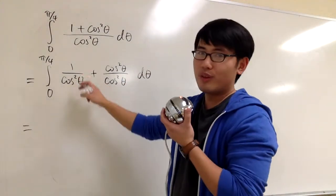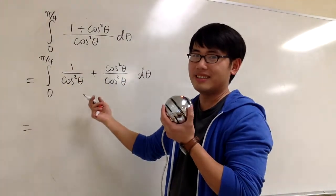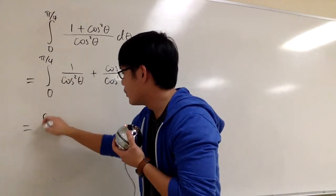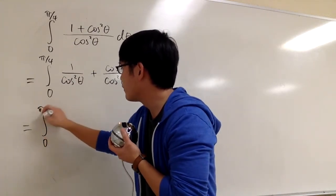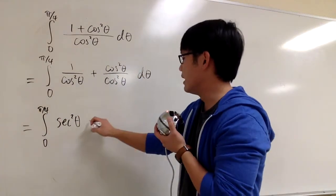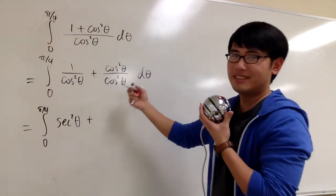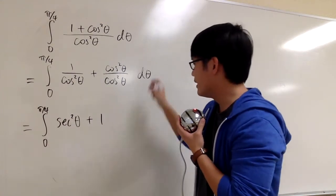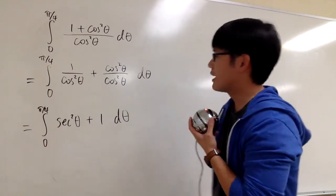What's this? What's 1 over cosine squared theta? That's secant squared theta. So in another word, we are talking about the integral from 0 to pi over 4. This is secant squared theta plus, what's this? This is just 1, and then we have d theta for that.